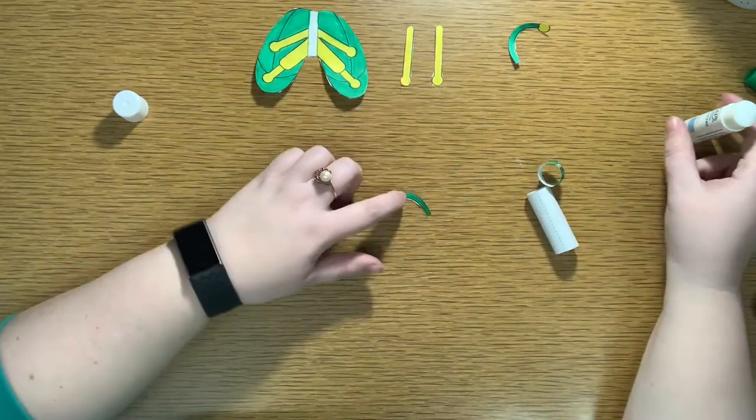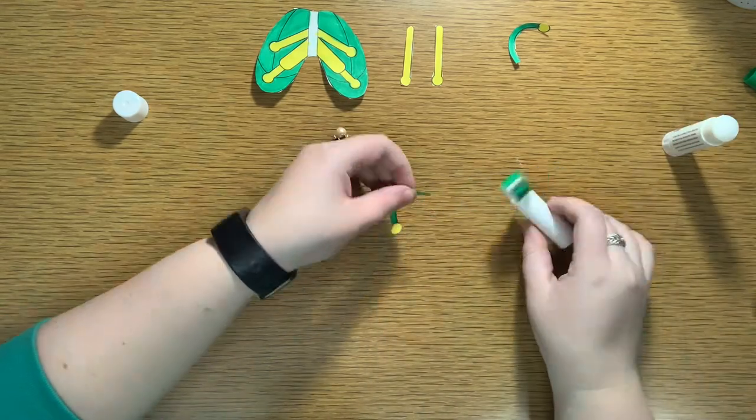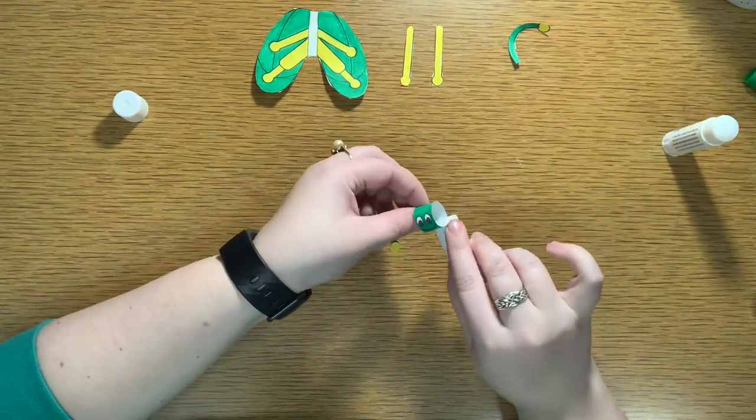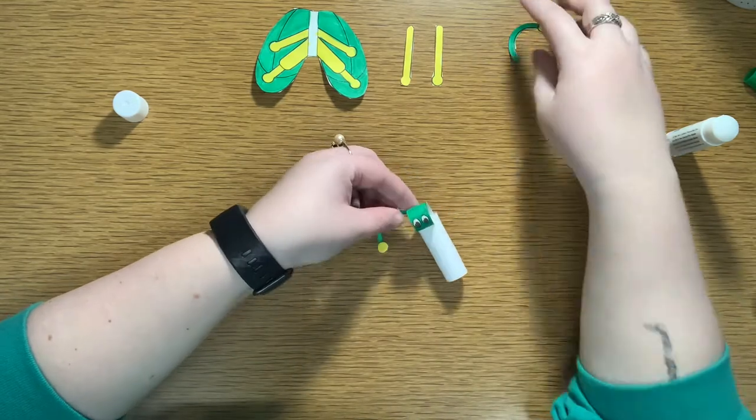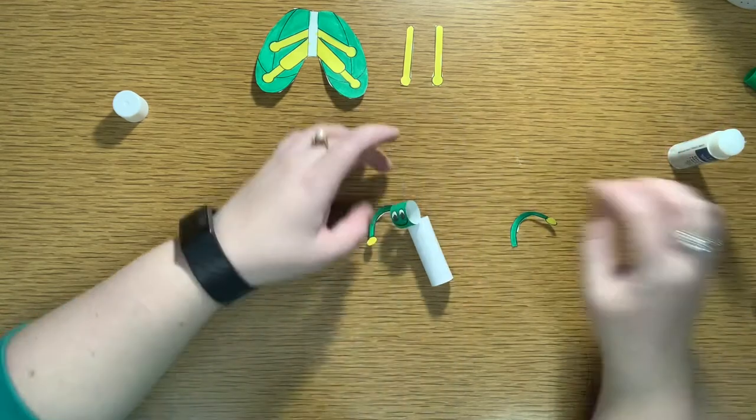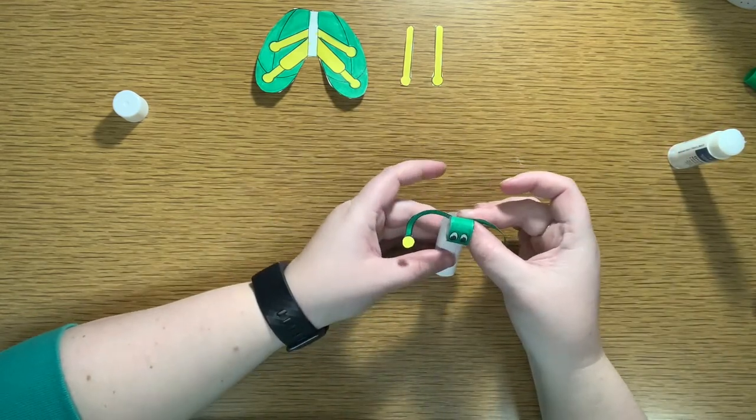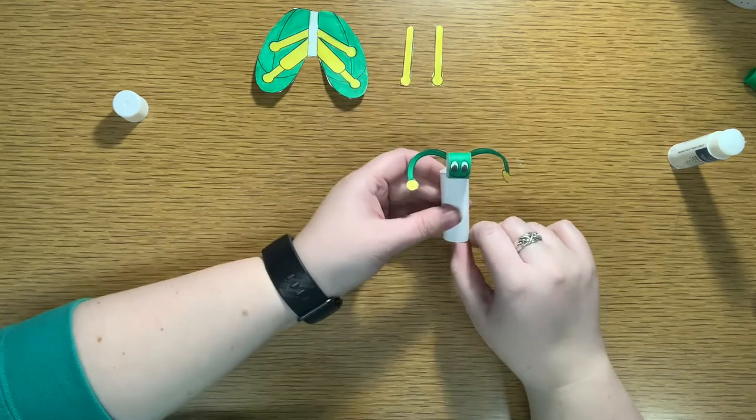I'm going to do my antenna next. You can really put these on however you want, but I'm going to put a little bit of glue at the bottom and attach it to the back of the head, holding for 5 seconds. And the other one, same thing. A little glue at the bottom, attach it to the back of the head and hold it for 5 seconds. Pretty cute.